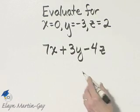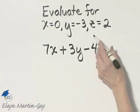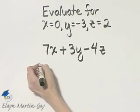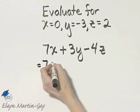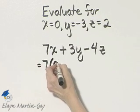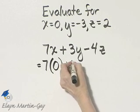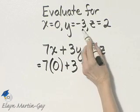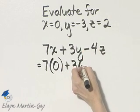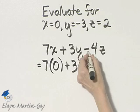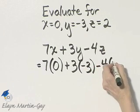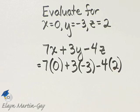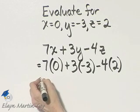Let's evaluate this expression given these replacement values. That would be 7 times x — in this case x is replaced with 0 — plus 3 times y, where the replacement value for y is negative 3, minus 4 times z, and z's replacement value is 2. Now let's remember order of operations and simplify this expression.